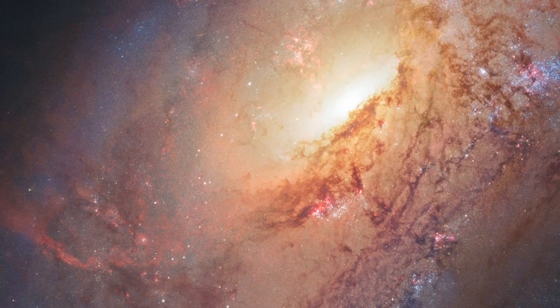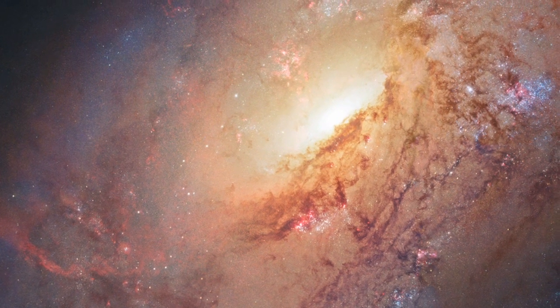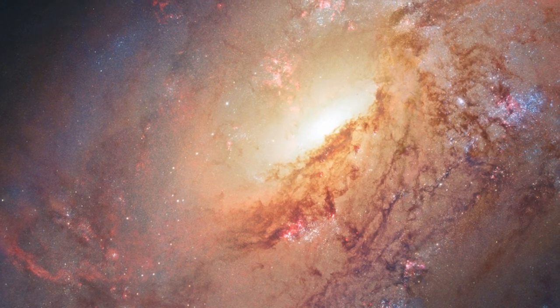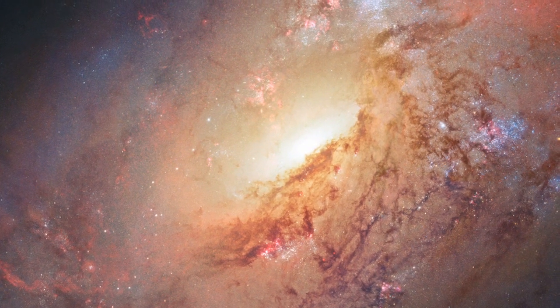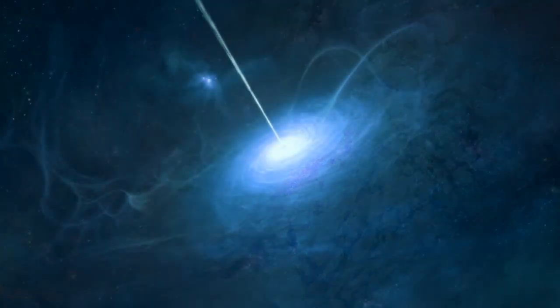This huge black hole's bottomless appetite is behind much of the galaxy's unusual behaviour. Messier 106 appears to be emitting powerful radiation from its centre, something we do not see with our Milky Way.